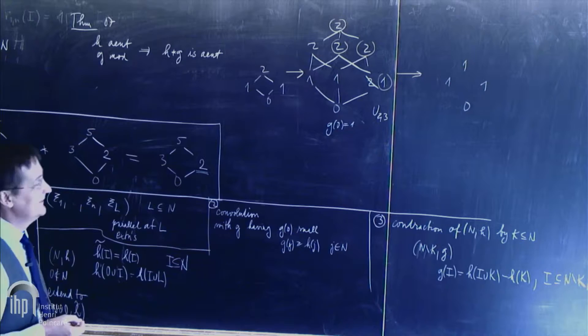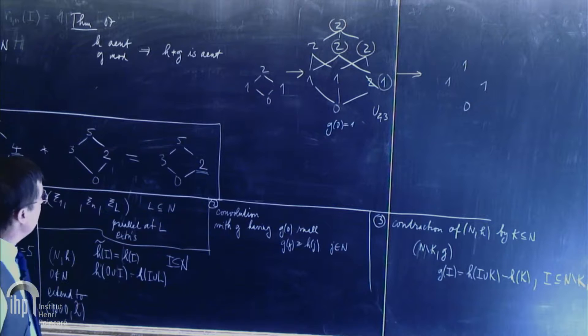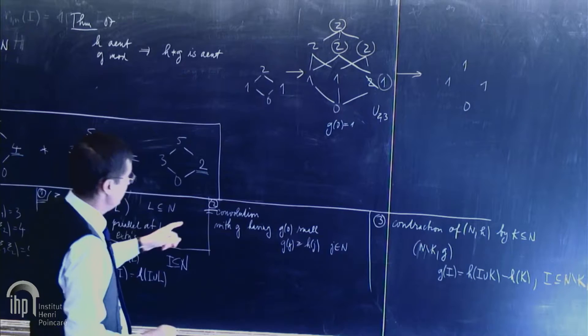So the reduction was only to dimension nine, and it was only one-sided, because, OK, there is still too many problems with four variables. But what's going on is our special moves of this sort. And they are constructed in three steps. Parallel extension, convolution, and contraction.